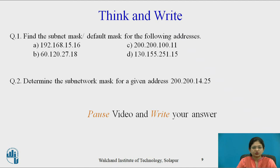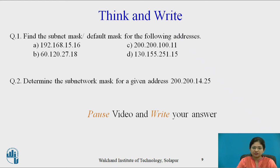Think about these two questions and write down the answers. The first question is: find the subnet mask or the default mask for the following addresses — there are four addresses A, B, C, D. The second question is: determine the subnetwork mask for the address 200.200.14.25. Now pause the video and write down the answer.